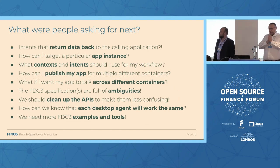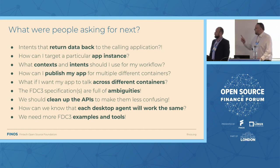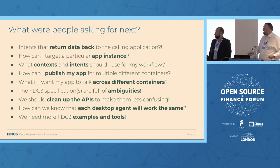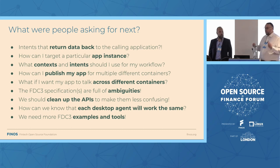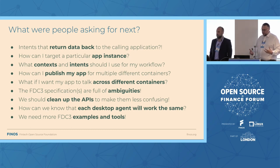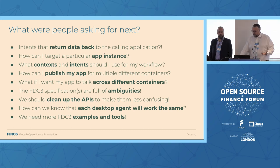So what were people asking us about? What were some of these big things we had to tackle? They were saying: how can I have intents that return data back? How can I target a particular app instance? What context and intents should I use — there aren't enough. How can I publish my app easily? How can I make it work across different containers? There are lots of ambiguities in the standard — it's confusing, we need to fix that. We need to clean up some of the APIs, ensure each desktop agent will work the same, and we need more examples and tools. All of these things we were hearing from people, and it was kind of daunting to figure out how to cover all of them — that's where the discussion groups came in.